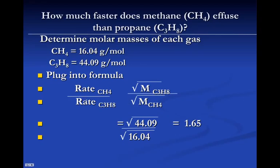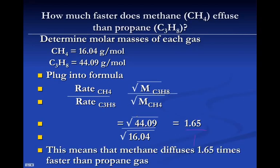So when we do this, the rate is over one. That means it's 1.65 times faster. Or you could say that the C3H8 is 1.65 times slower. So that's how you would do that calculation.